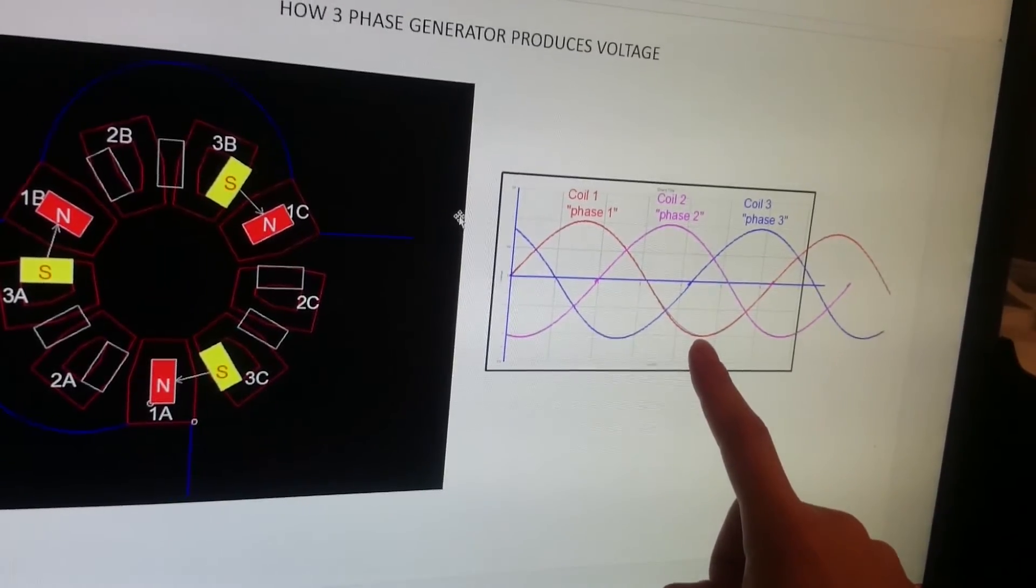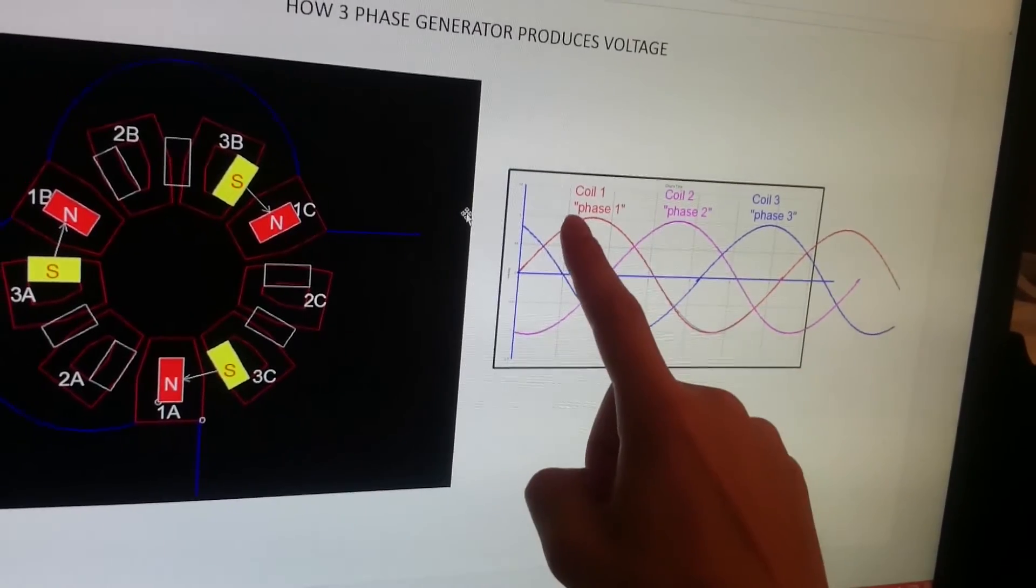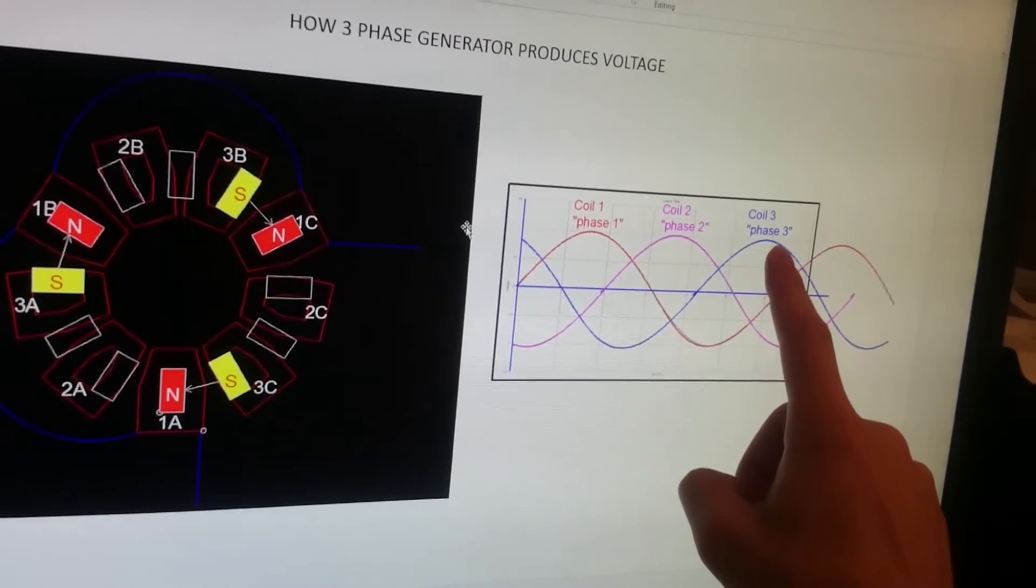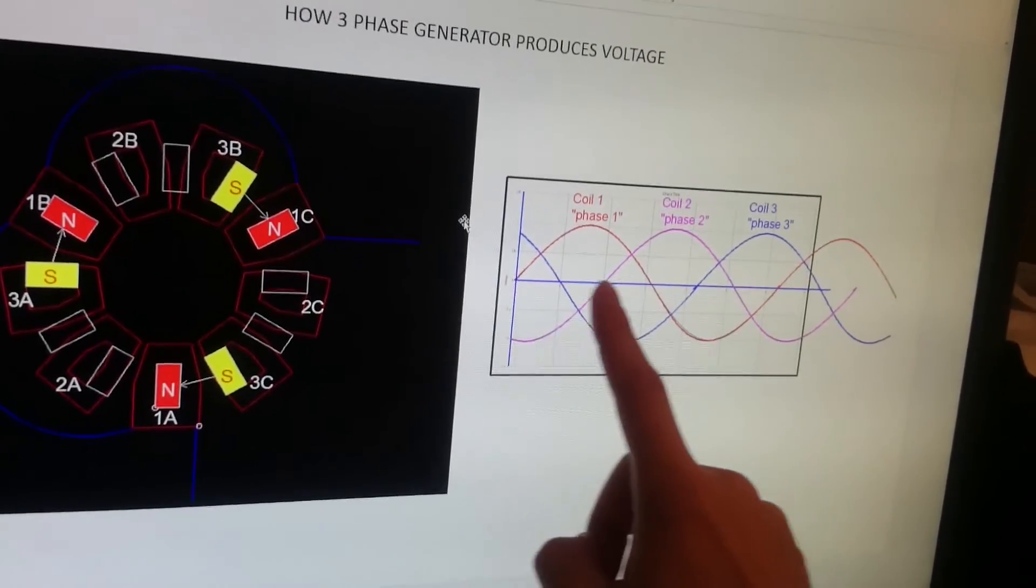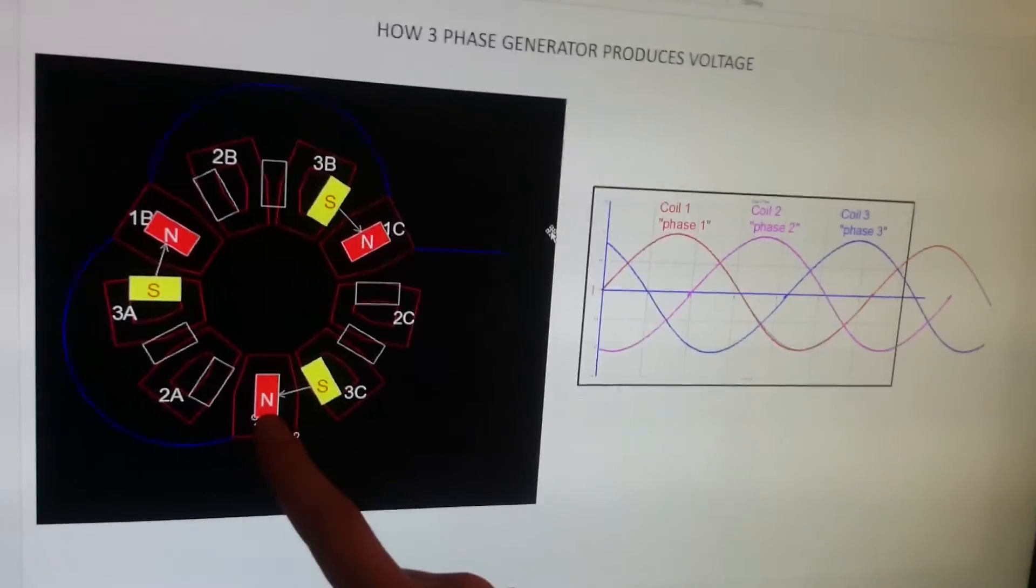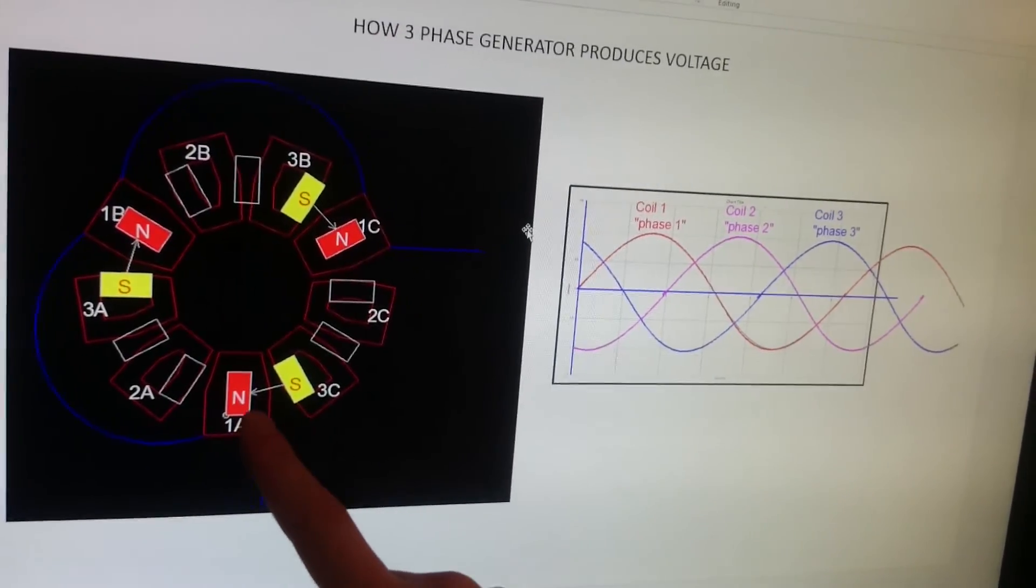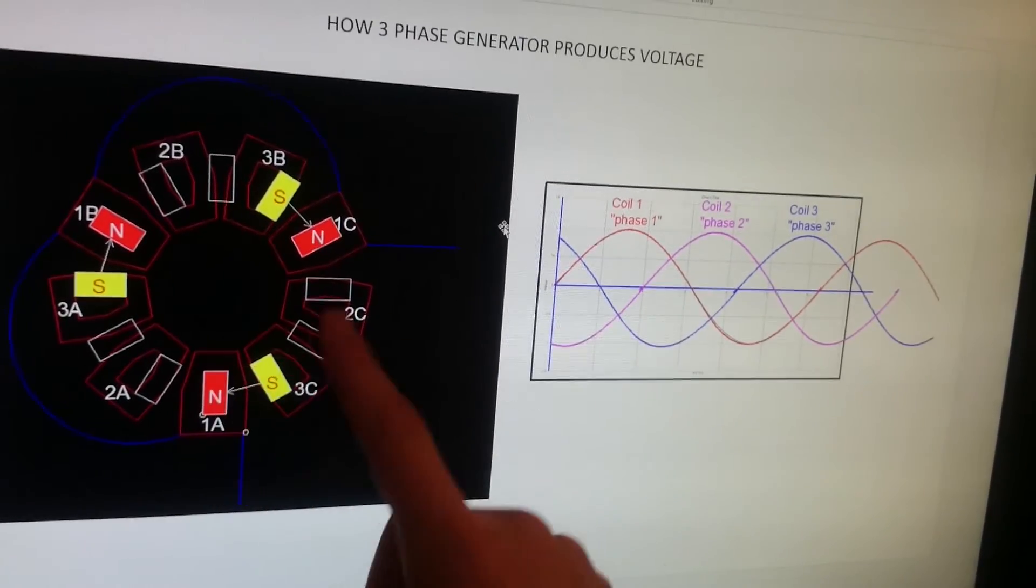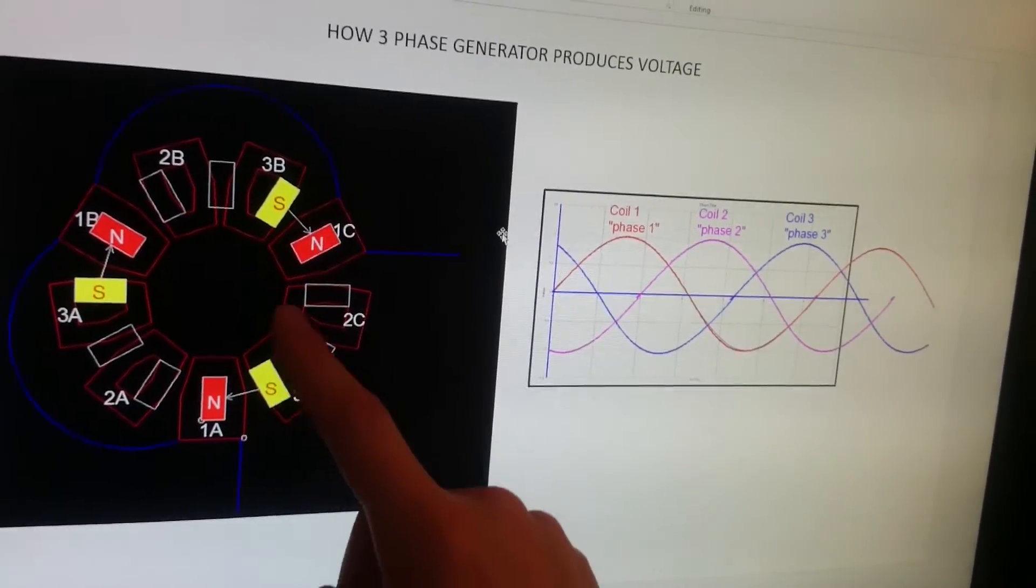Why are they shifted? Coil 1 phase is here, coil 2 phase is here, coil 3 phase is here. This axis means time. With 12 magnets and 9 coils, they can't peak at the same time—the three phases are shifted a little bit in time.